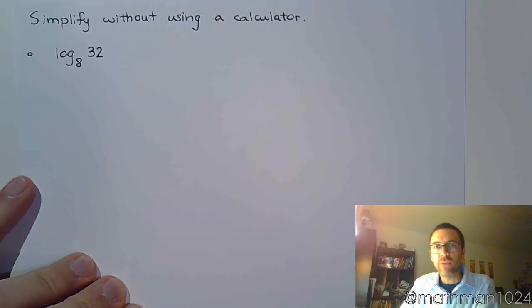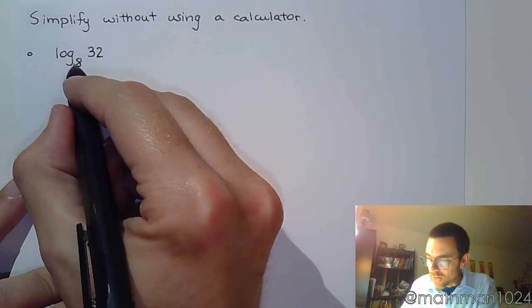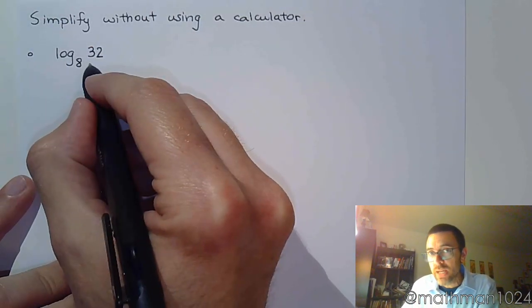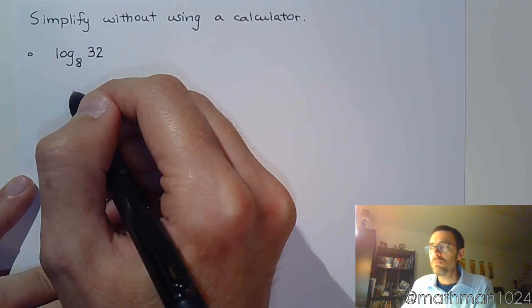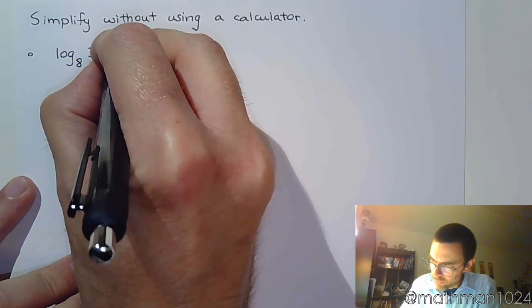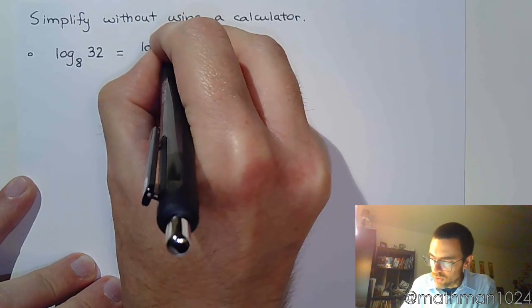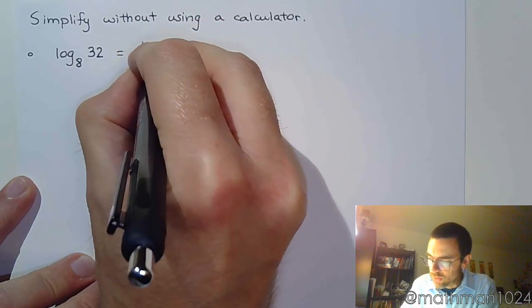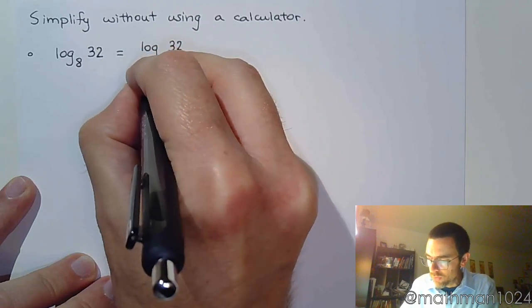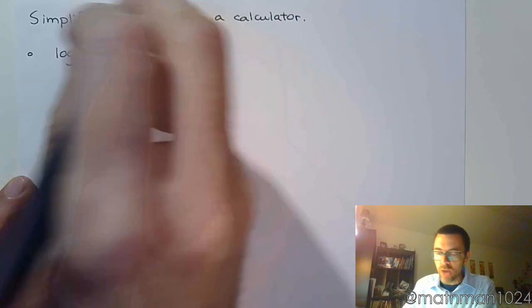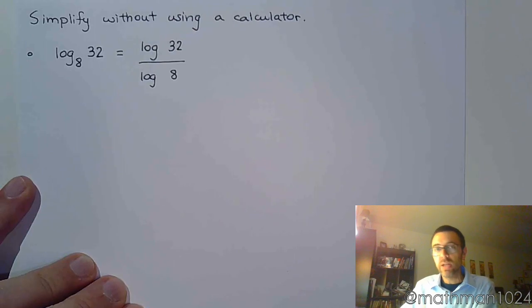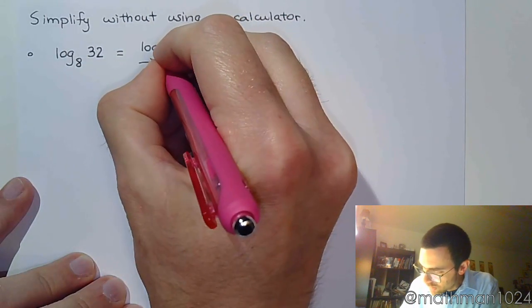But we just got done talking about the change of base theorem. And if we can recognize that these guys have the same base, then maybe it'll be a little bit easier. Now if you had a calculator that you could use, you could just say log of 32 over log of 8. However, there is a common base here. Now the common base is 2.